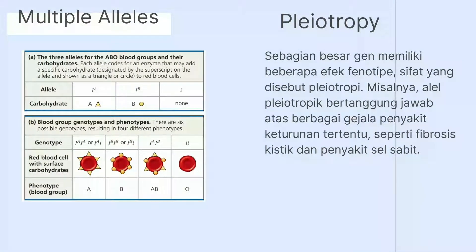Kita lanjut ke multiple alel. Sebagian besar gen ada dalam populasi dalam lebih dari 2 bentuk alel. Sebagai contoh, 4 fenotip golongan darah ABO pada manusia dibentuk oleh 3 alel untuk enzim I yang menambahkan karbohidrat A atau B. Enzim yang dikodekan oleh alel I^A menambah karbohidrat A, sedangkan alel I^B menambahkan karbohidrat B, dan alel i tidak menambahkan. Ketika ditambahkan karbohidrat A, seseorang bergolongan darah A; karbohidrat B menghasilkan golongan darah B; genotip I^A I^B menghasilkan golongan darah AB; dan jika tidak ditambahkan karbohidrat, seseorang bergolongan darah O.